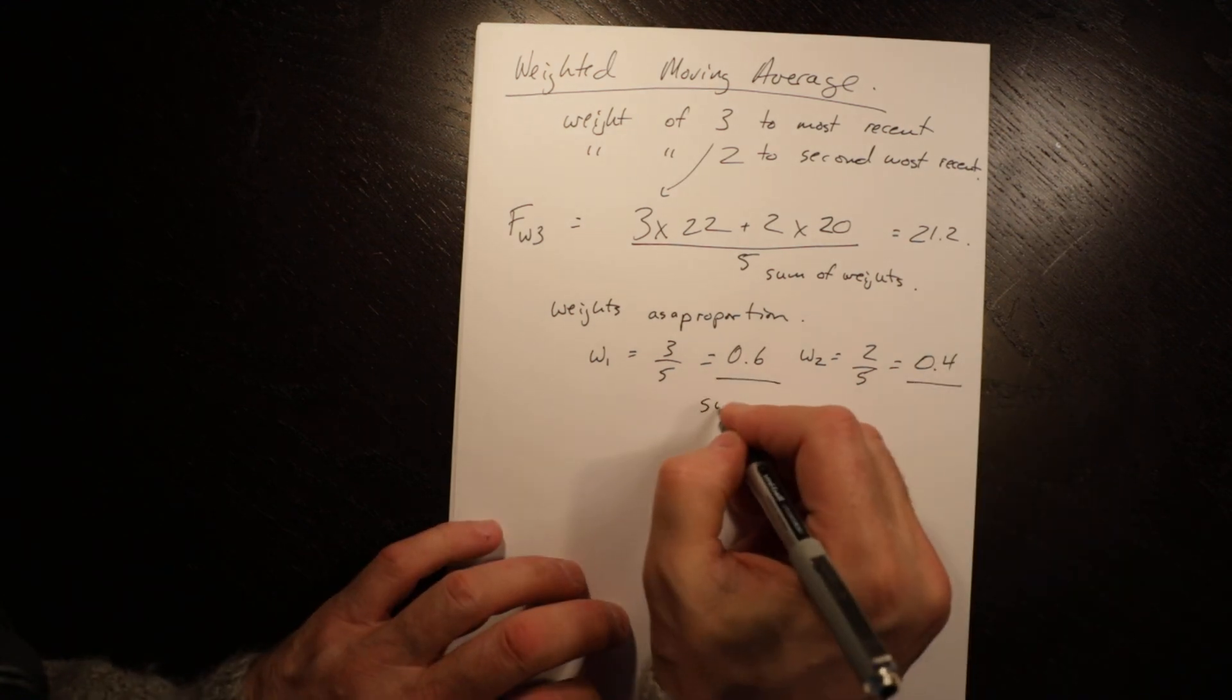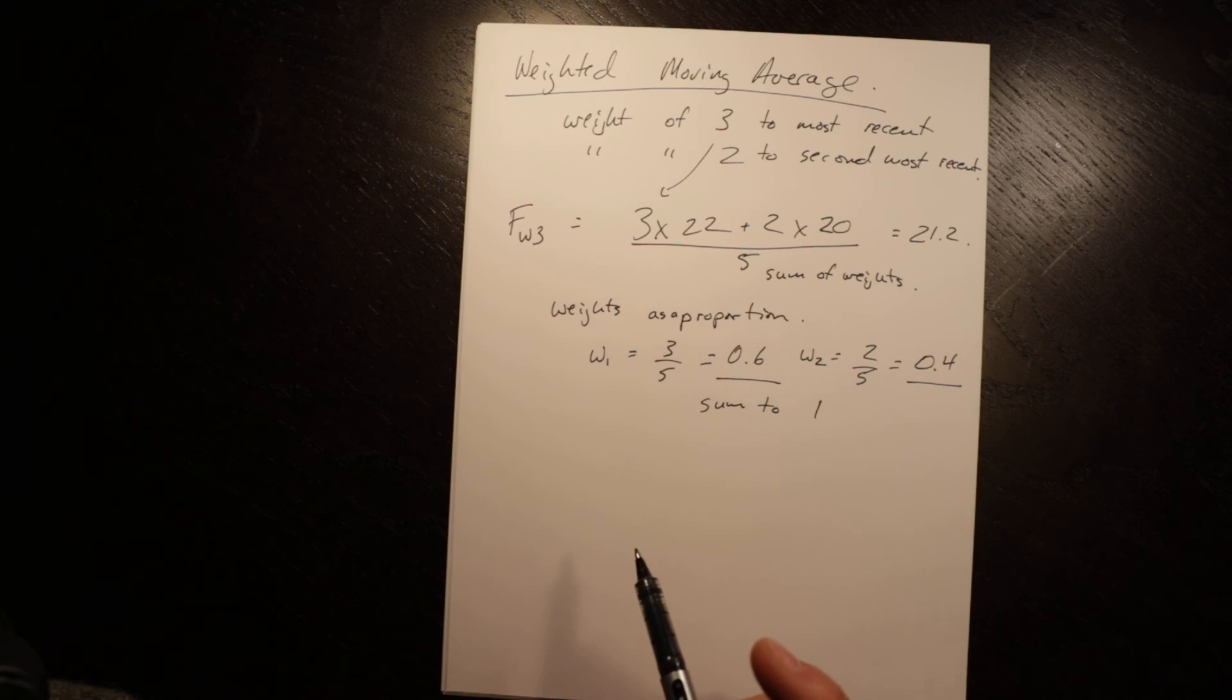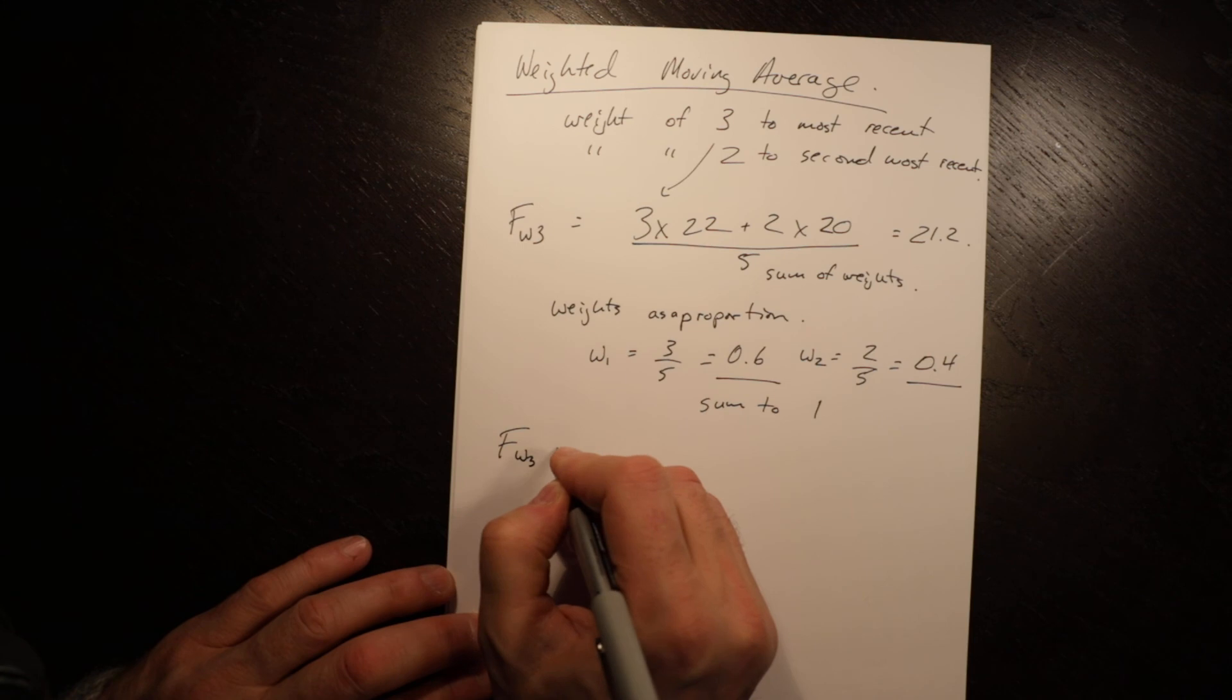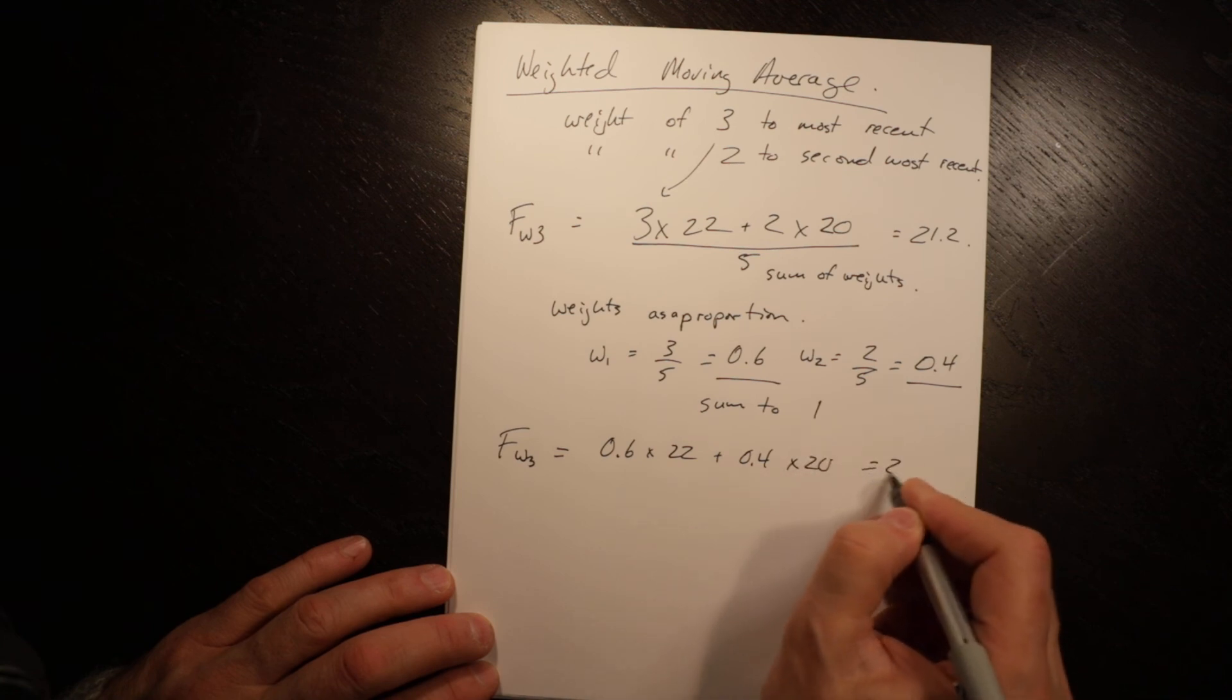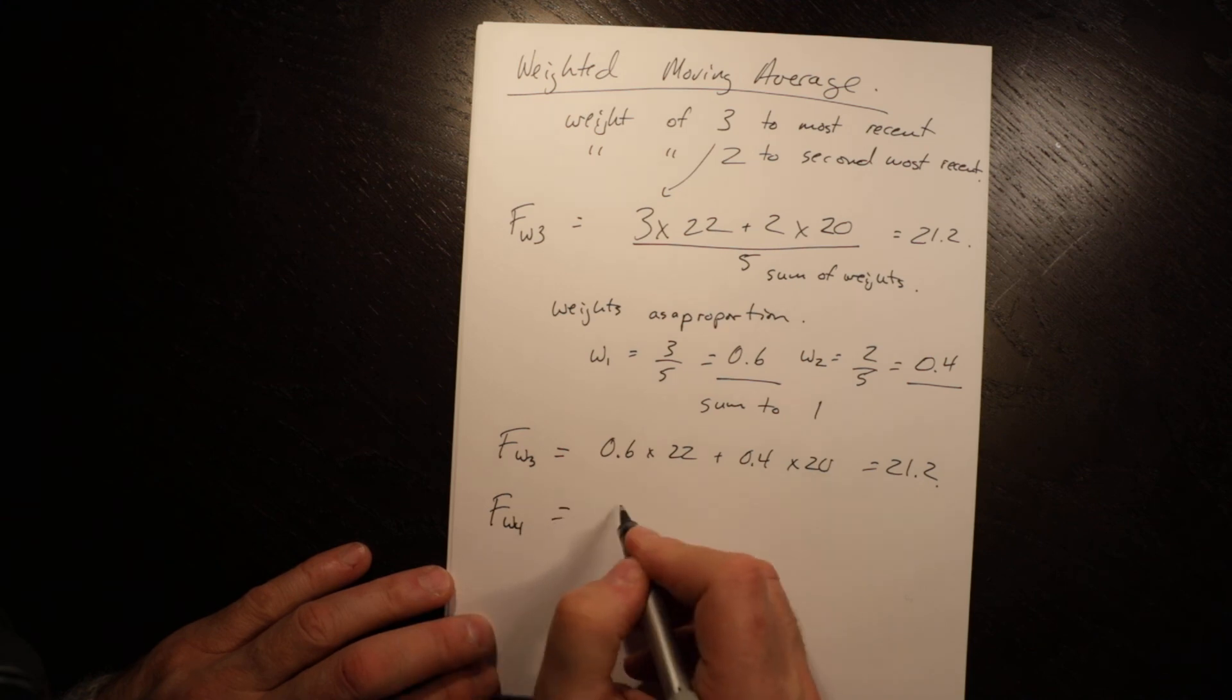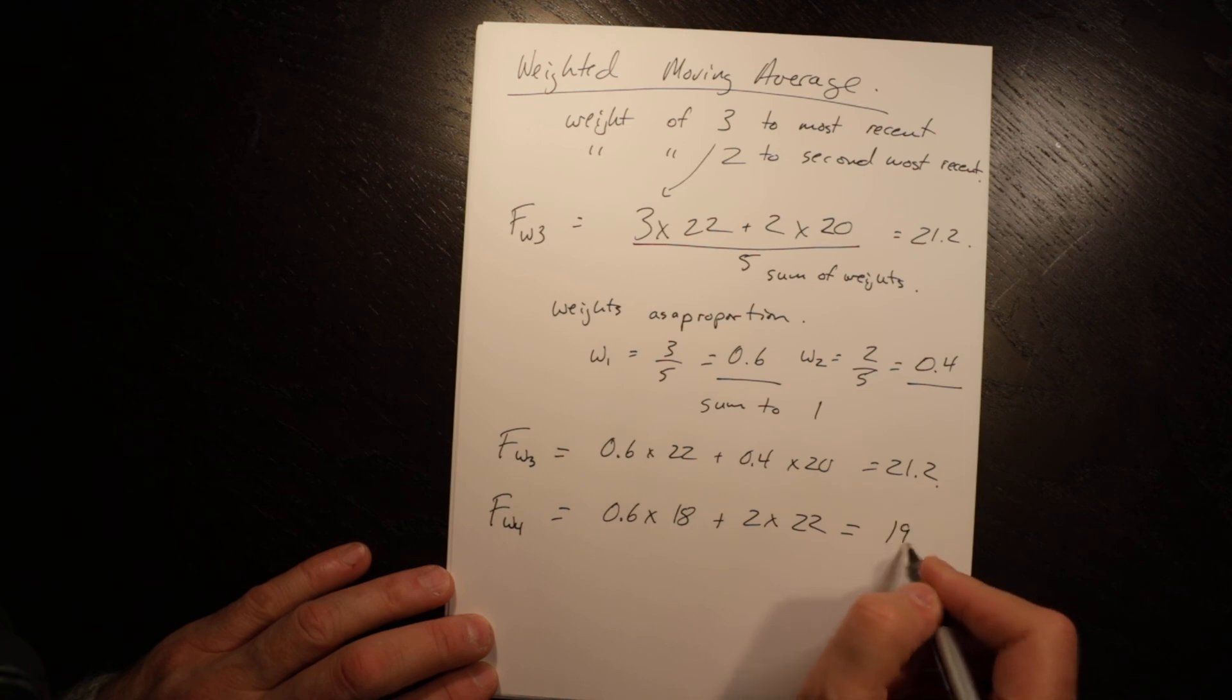Weights need to sum to one and then you don't have to do the division. So that it just becomes an easier way to do it. So similarly, then forecast for week three is going to equal to 0.6 times 22 plus 0.4 times 20 is equal to 21.2 and for week four is equal to 0.6 times 18 plus 2 times 22 equals 19.6.